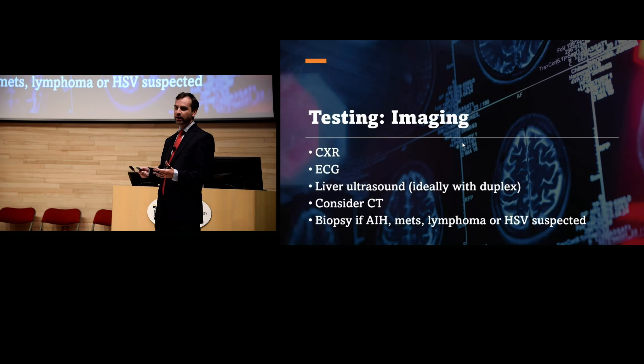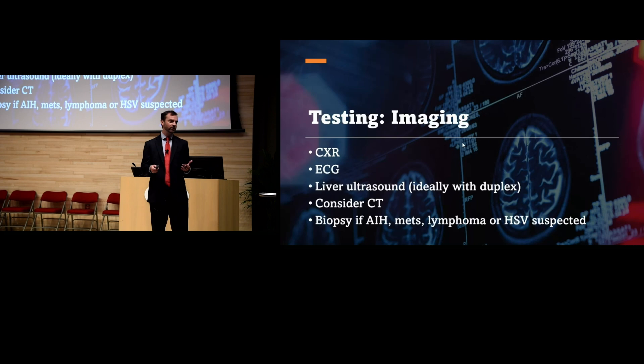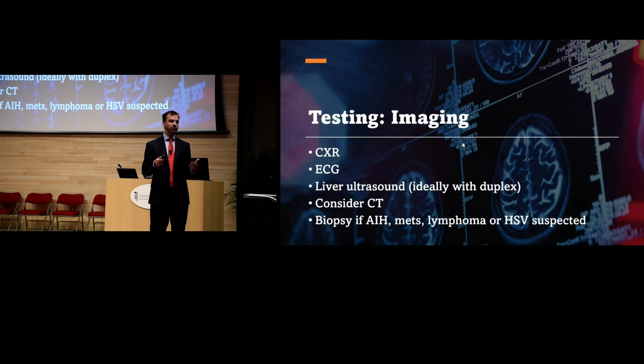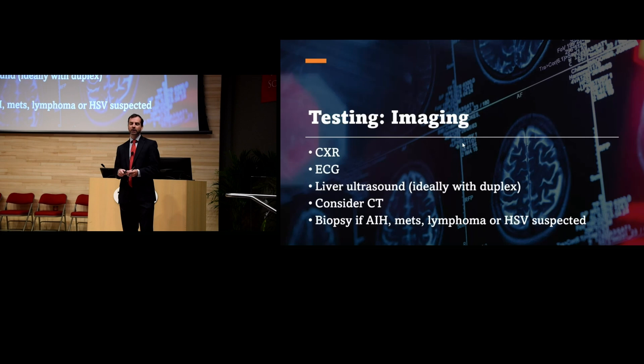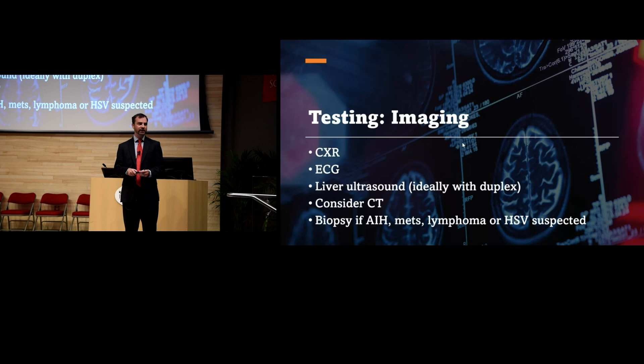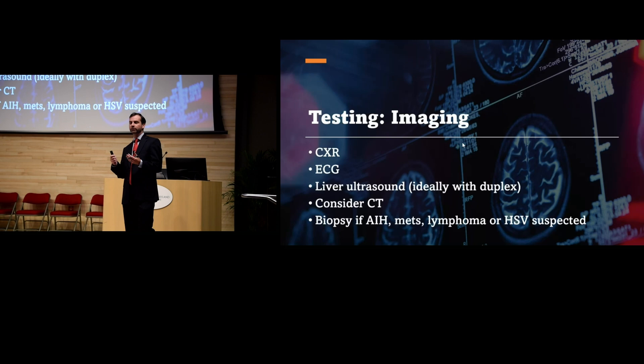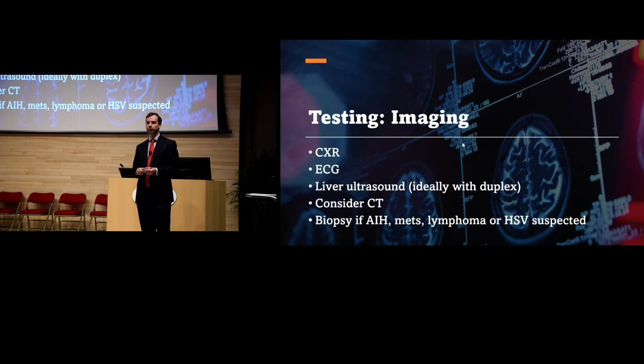For imaging, chest X-ray and EKG are essentially pre-op workup if they go to transplant. The big one is the liver duplex — order an ultrasound of the right upper quadrant with Dopplers. You can also get a CT of the abdomen and pelvis; if they come upstairs we often get a triple-phase CT or MRI to look for hepatocellular carcinoma that might rule a patient out for transplant.